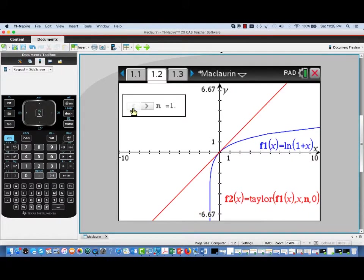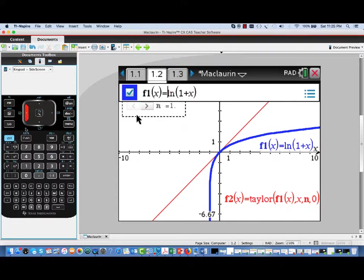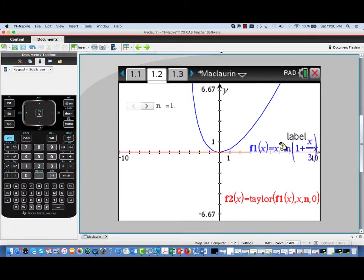Now I'm returning the clicker value all the way down to n equals 1 again. And the next thing we're going to do is take a look at a related function. So I'm going back to my function entry line. And I'm going to alter f1 of x now. I'm going to edit it to be now x times the natural log of the quantity 1 plus x over 3.